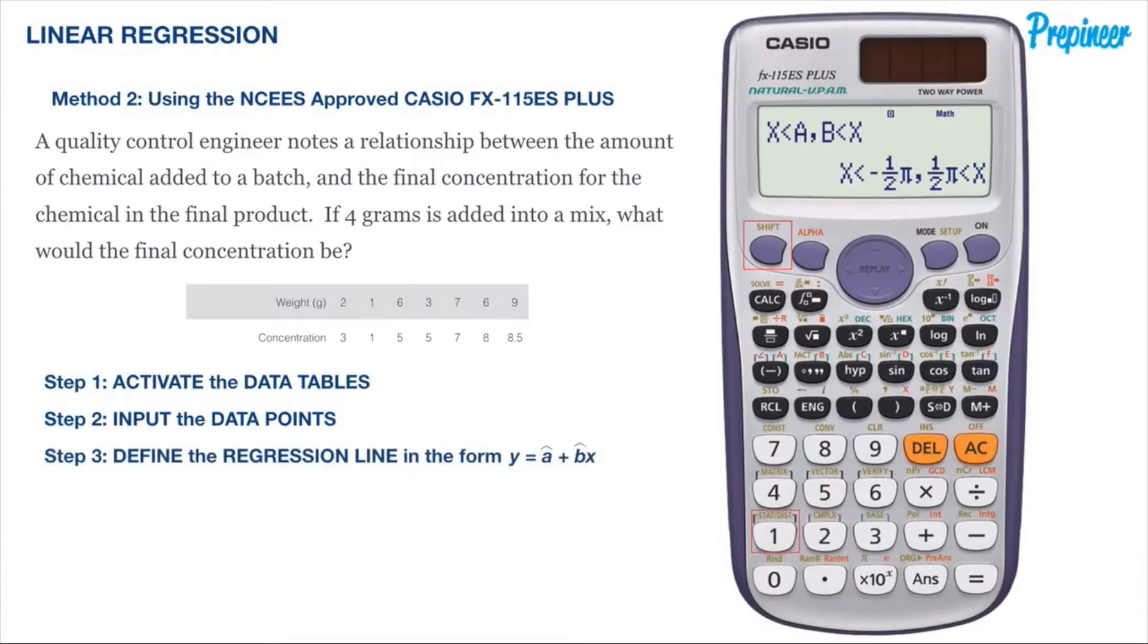We can now define the variables of our regression line with all of our data points input into our calculator. We're just going to let it do our dirty work and save us a ton of time. To do this, click the shift button and the one button to activate the stat distribution functionality, which is indicated in yellow. You'll be brought to a menu that looks similar to this. Press 5 for regression, and you'll be brought to a menu that looks something like this.